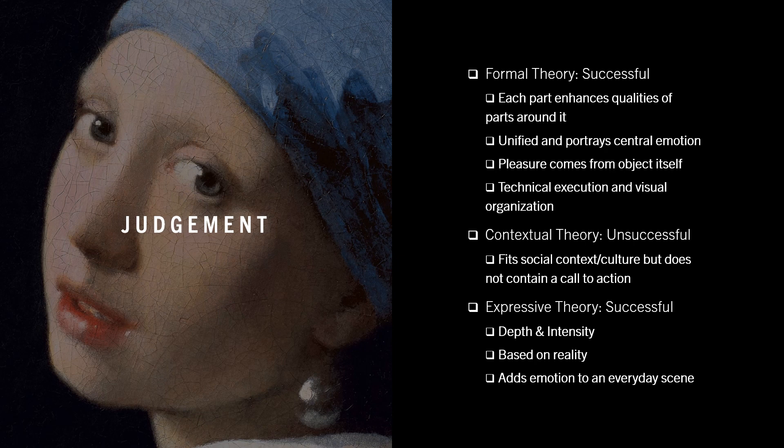The contextual theory lays importance on the social function and intention of the piece in the context of the time in which it was created. During the time this piece was created, the Netherlands were in a golden age, with Dutch trade, science, art, and military among the most acclaimed in the world. Church art and sculpture became less prominent while still life and portraiture flourished. While this piece fits the culture of the time very well, it is the weakest through the eyes of the contextual theory, because it fails to portray a message that will advance a social cause. There is no call to action, and this piece was not meant to change human behavior in a public or visible way.